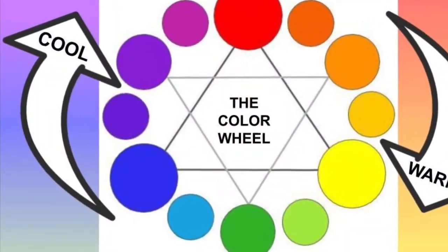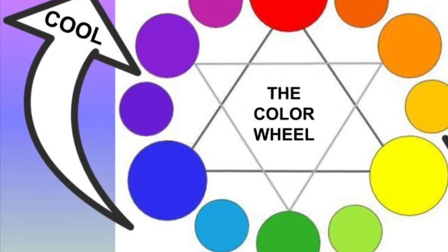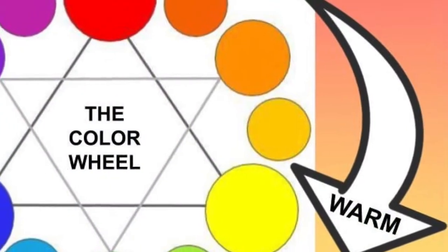This is a color wheel. You can see that on one side we have the cool colors and on the other side we have the warm colors.